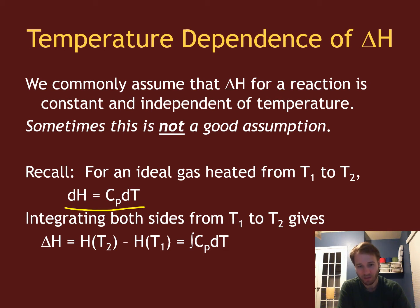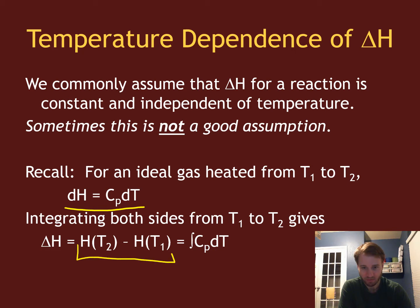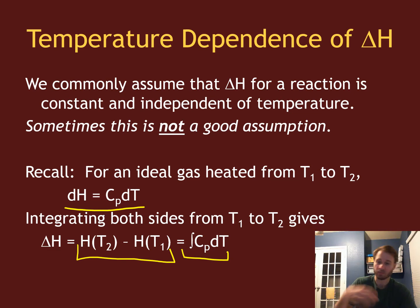Enthalpy dH depends on temperature by the heat capacity at constant pressure times dT. And so if we integrate both sides of this, this enthalpy change is just related with the integral of Cp dT, which if Cp was constant would just give you Cp delta T, which we've talked about before.